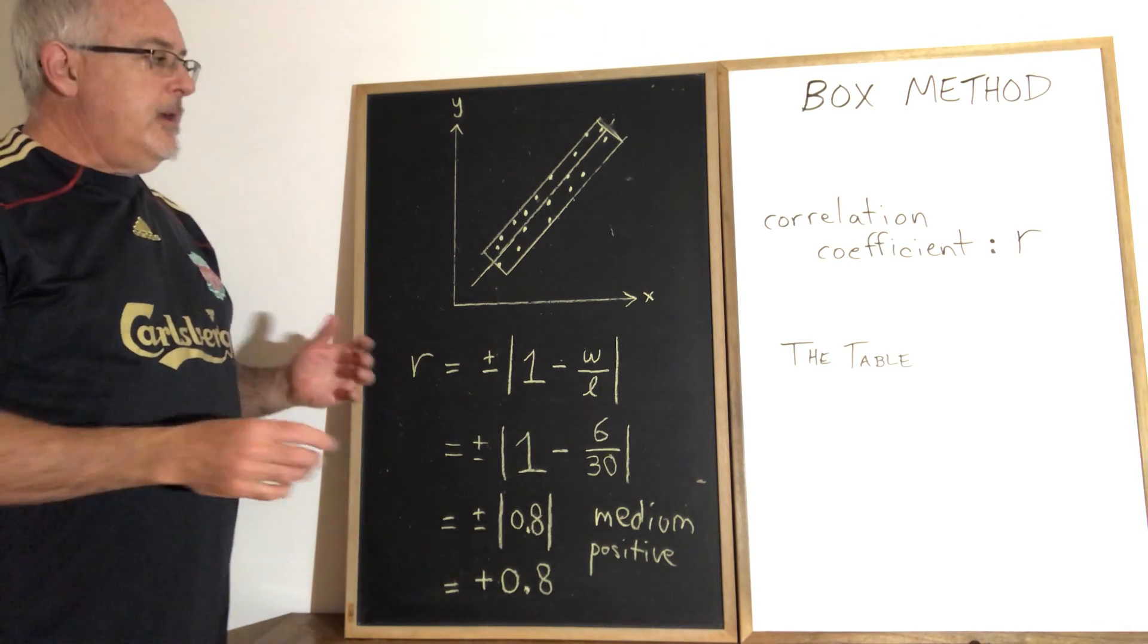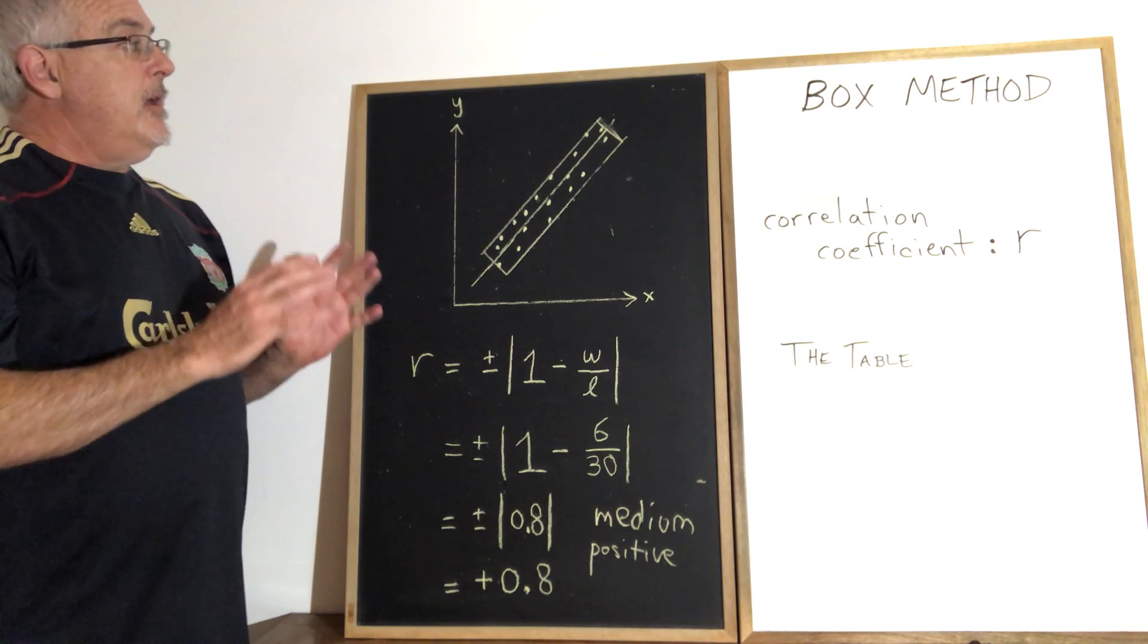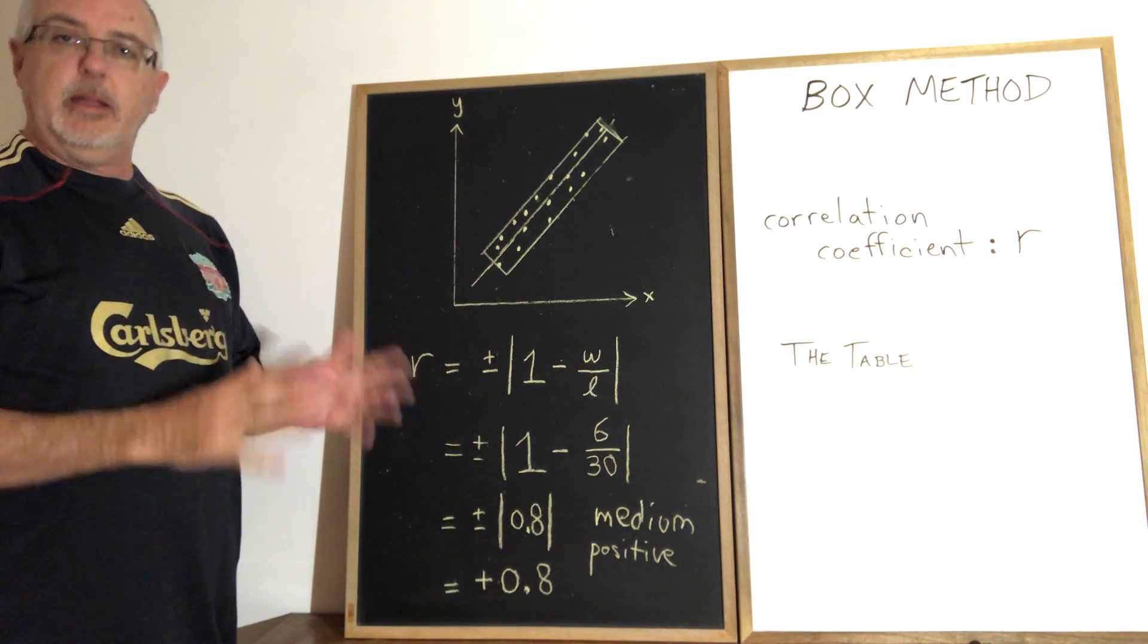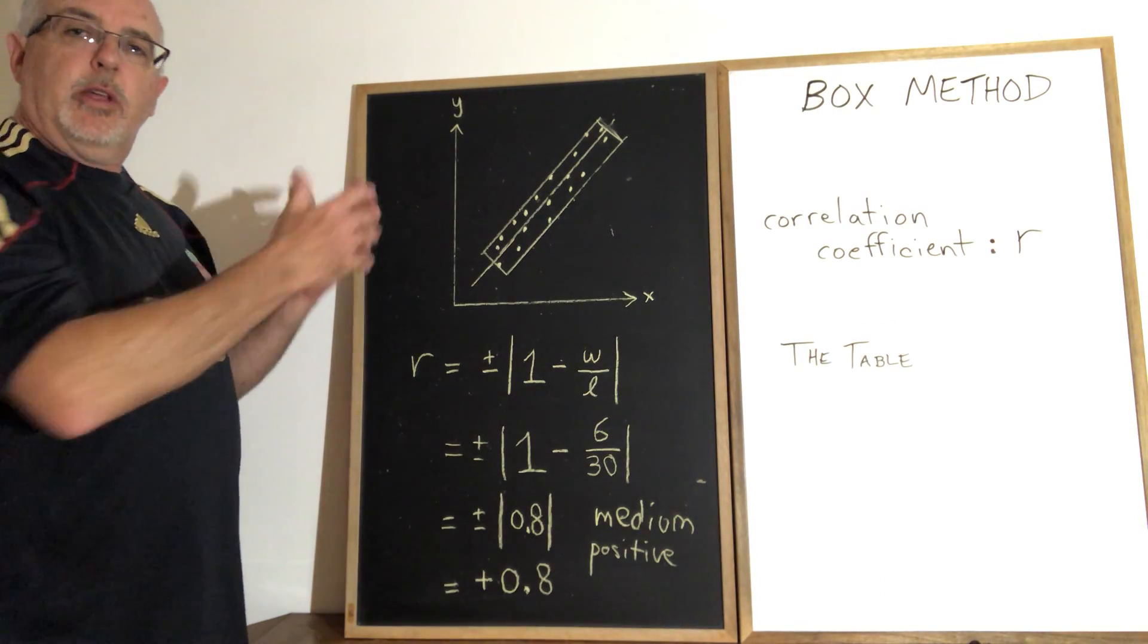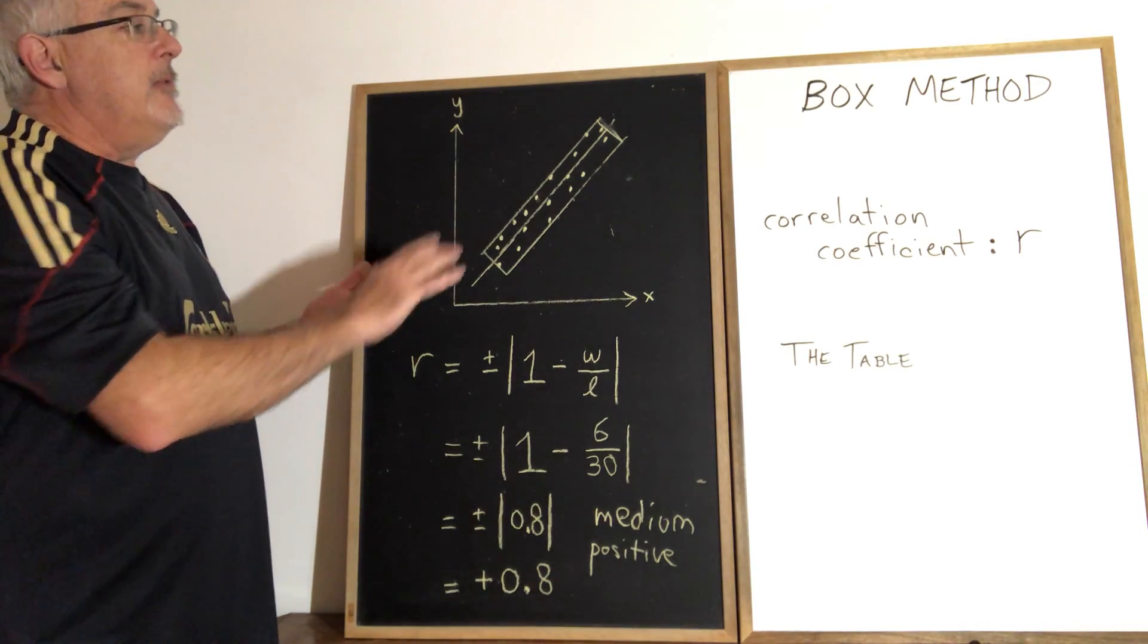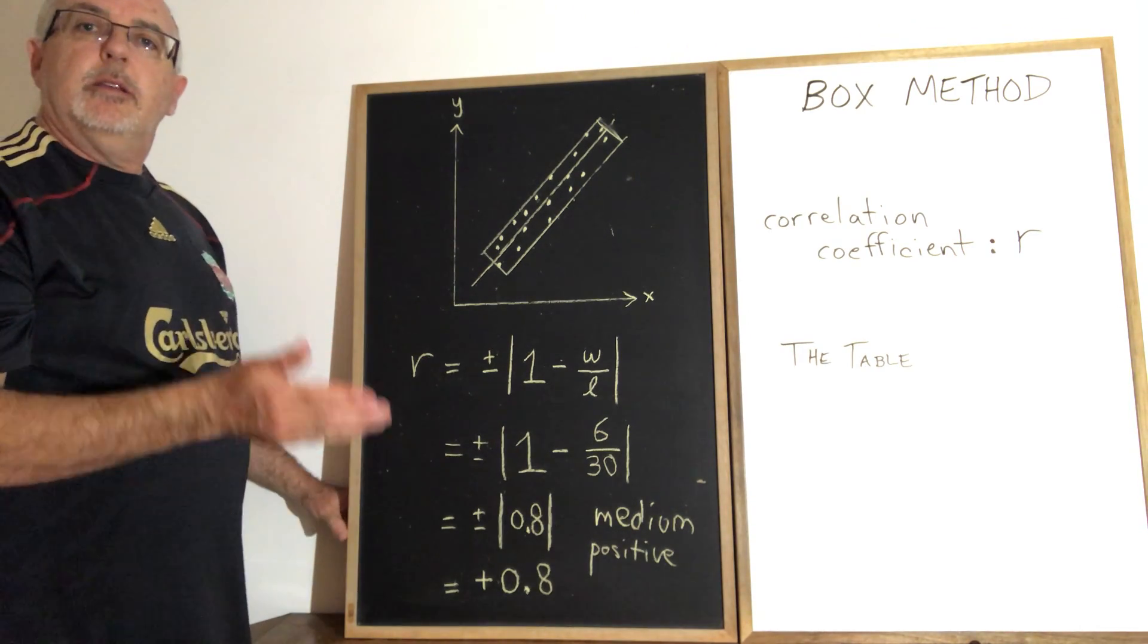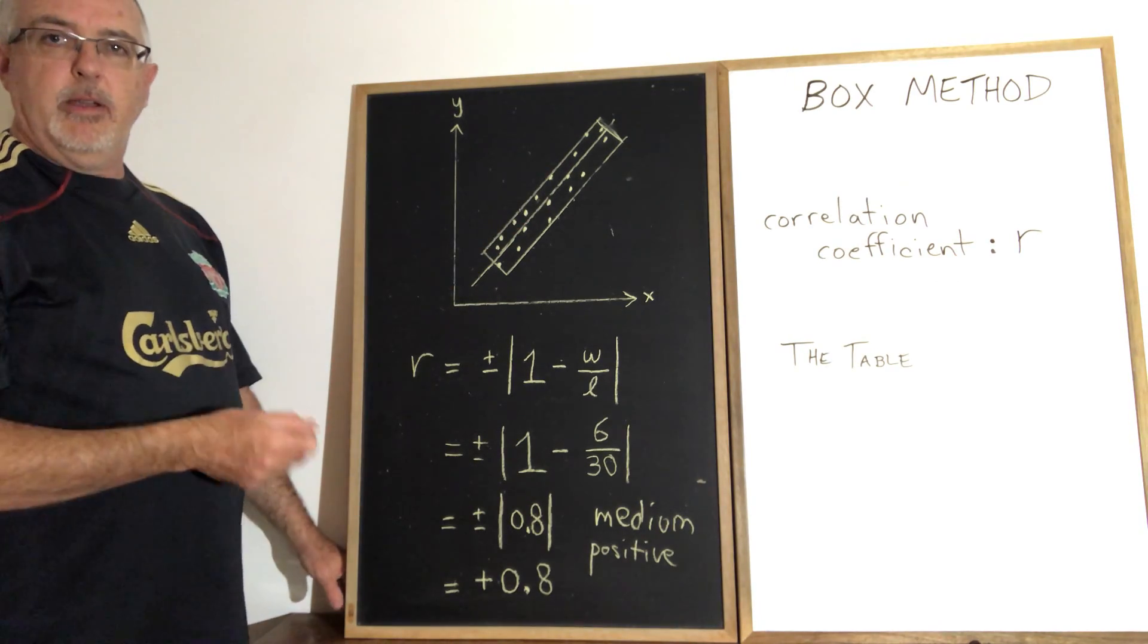The box method is quite an easy method to use and most students really like it because of that. You may be in a position where you're given a scatterplot and asked to find the correlation coefficient and you may be told to use the box method. That can happen in a test question. But what can also happen is you're given a situation and you're asked to answer questions where finding the correlation coefficient is necessary, but they don't specify what method you have to use. In that case, students get to choose their favorite method. A lot of my students will always choose the box method. They find it the easiest.